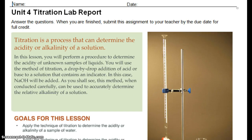Hey chemistry, Mrs. KJ here, going over the titration lab. You don't have to write anything down, just answer the questions as they pop up on the screen. So what we're going to talk about is titration. Titration is a process that can determine the acidity or alkalinity of a solution, so it can determine if something is an acid or if it is a base.